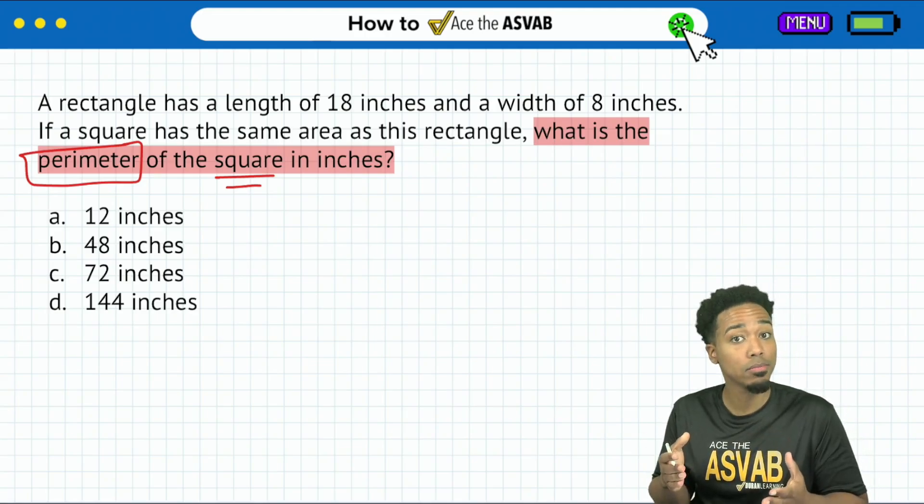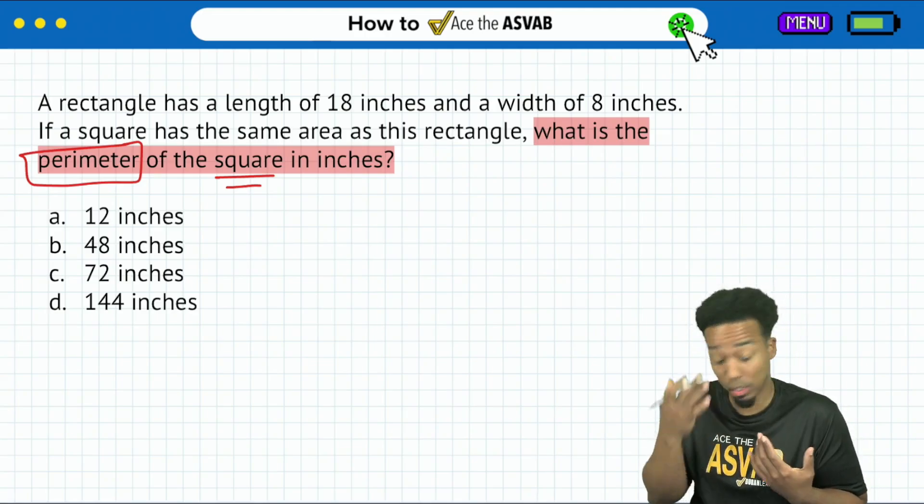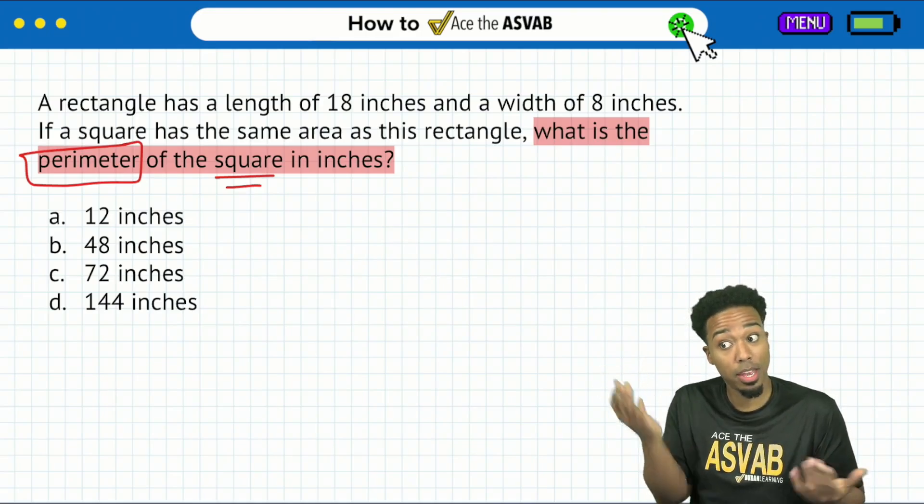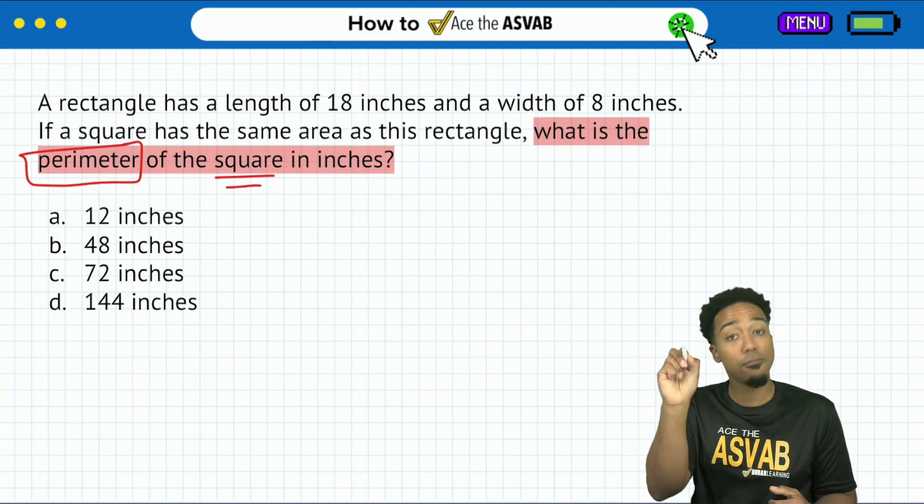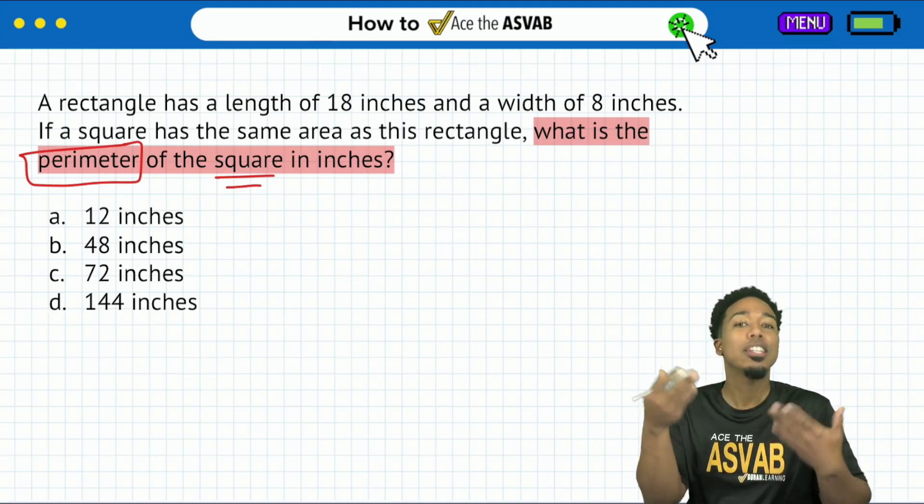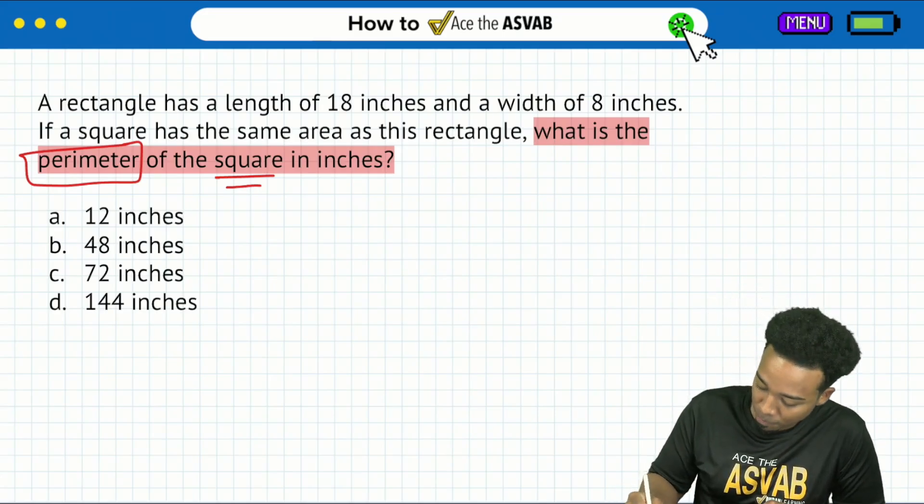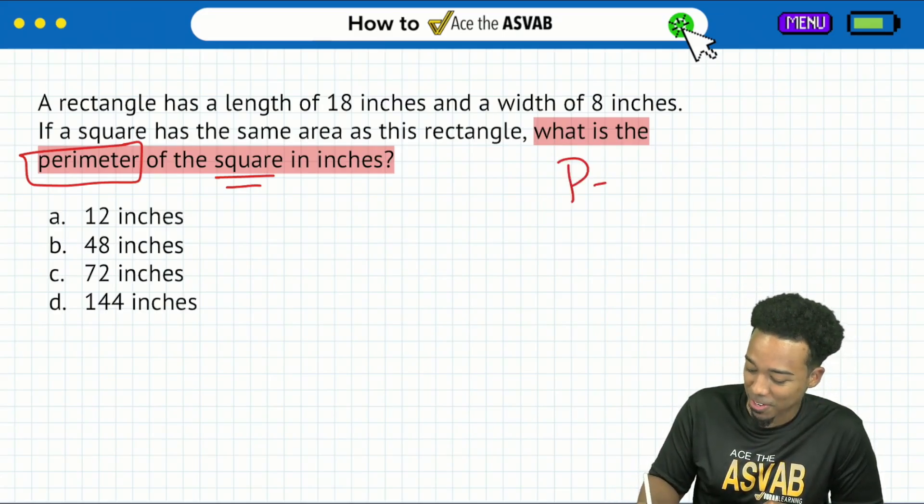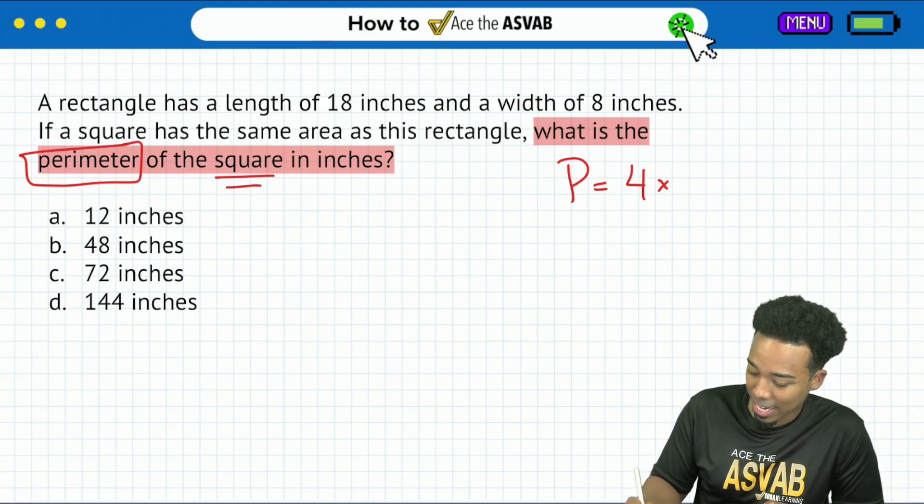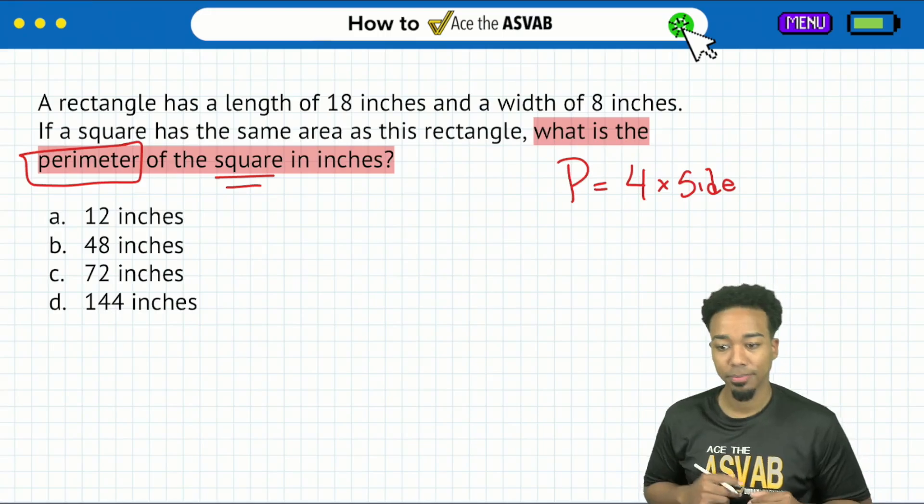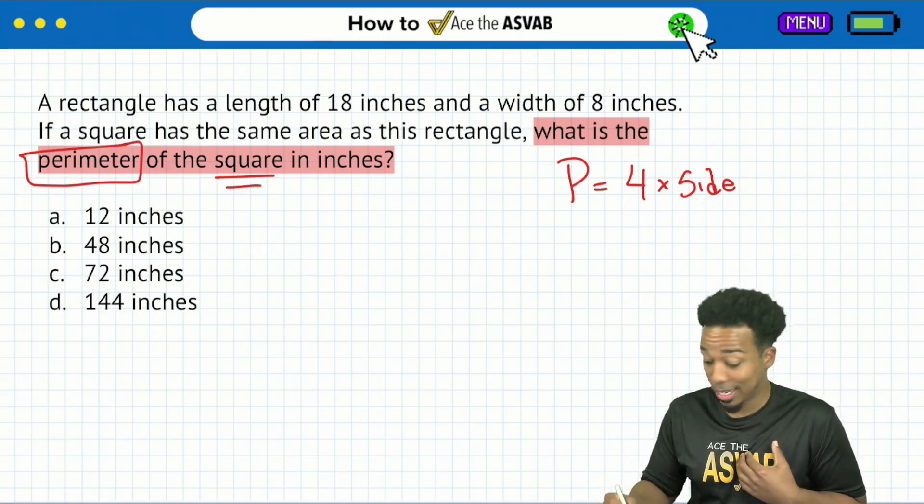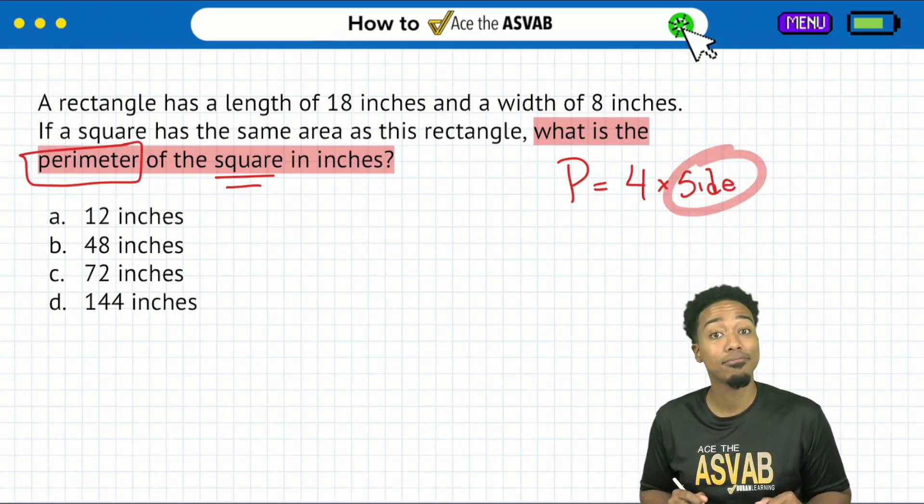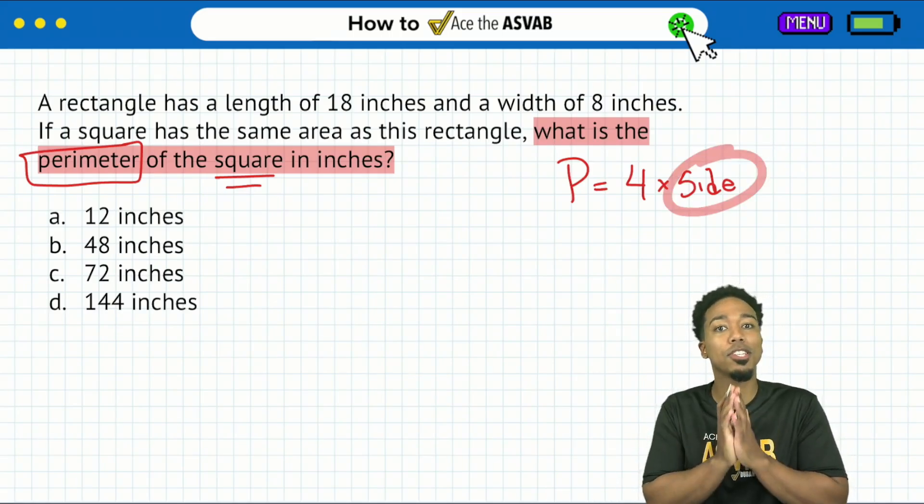First things first, what do we do? We always start with the question. So right over here, what is the perimeter of the square in inches? Sounds good. So I'm going to highlight this right here. What is the perimeter of the square in inches? Don't worry about anything else, my party people. Nothing else matters. The only thing that matters right now is you wanting the perimeter of the square.